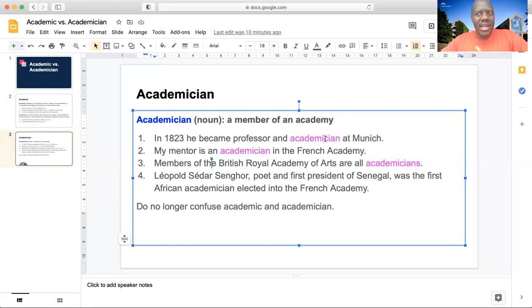like maybe the Munich academy of arts or something, but not that being a professor, you automatically call him an academician. It is wrong. You will rather call him an academic.